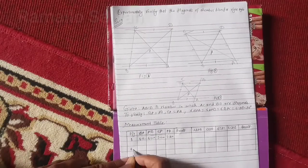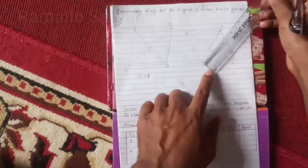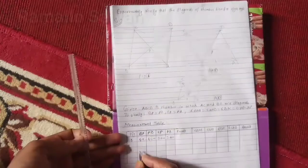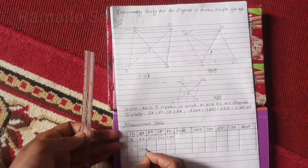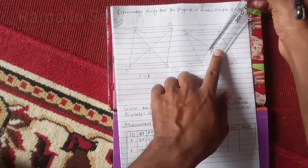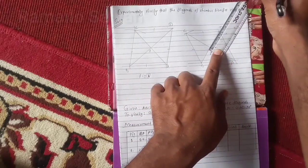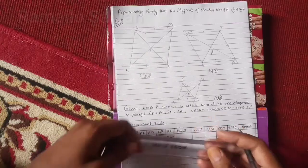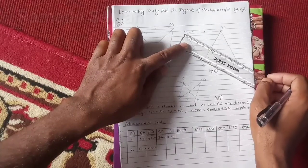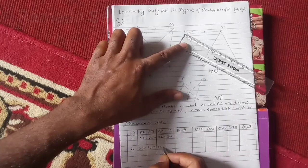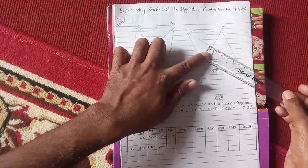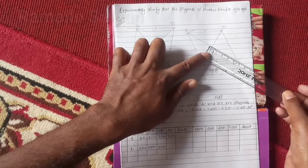From the second figure: length of BP = 2.9 cm, length of PD = 2.9 cm, length of CP = 4.3 cm, and length of PA = 4.3 cm.